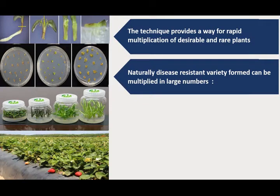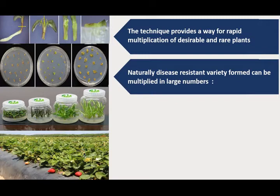Through tissue culture, we can produce naturally resistant varieties. As experiments reveal, virus-infected plants also contain some healthy stocks — these plants are resistant to that particular disease. If we take the explant of such plants, culture it through tissue culture, and produce a large number of plants, then all these plants are naturally resistant varieties. This technique has been successful in obtaining disease-free variety plants in cases of strawberries and sugarcane.